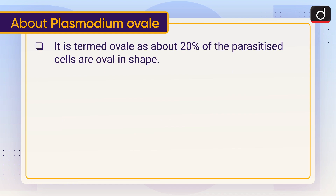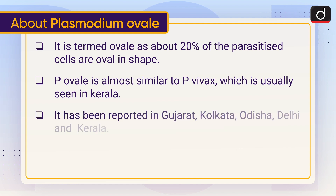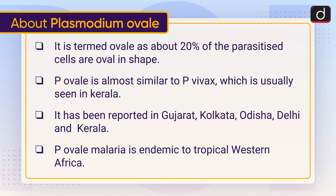It is termed 'ovale' as about 20% of the parasitized cells are oval in shape. P. ovale is almost similar to P. vivax, which is usually seen in Kerala. It has been reported in Gujarat, Kolkata, Odisha, Delhi, and Kerala.